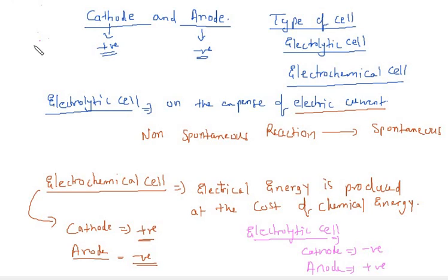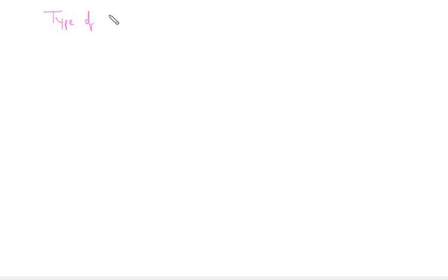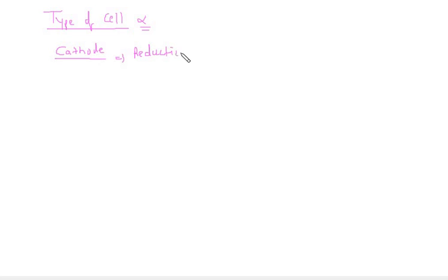Here I would like to clear a very important point. Whenever you are talking about cathode and anode, you should not bother about the type of cell. Whether it is an electrochemical cell or electrolytic cell, you just have to remember one thing: cathode is that electrode on which reduction takes place.